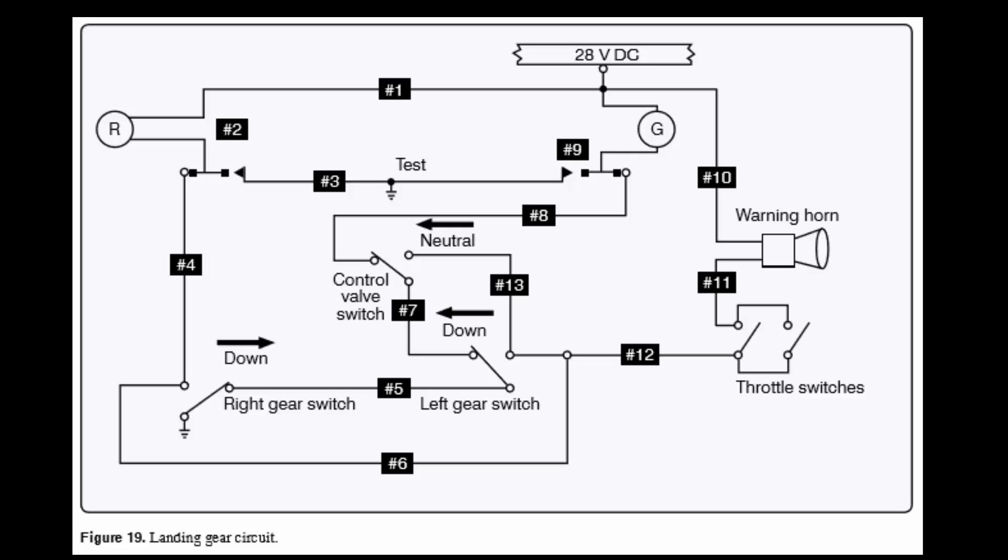This is very similar to Figure 18. The only thing is they moved the control valve a little bit and they changed by putting a test circuit in. Quick overview on this: 28 volt DC off the bus comes in to the whole circuit. On the right you have the gear warning horn and below it you have throttle switches.